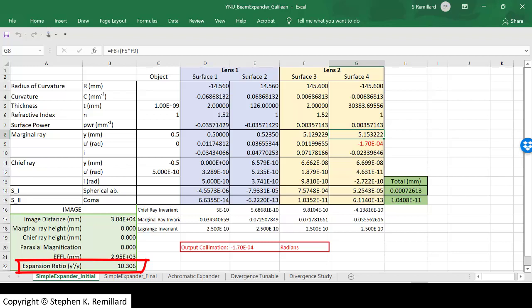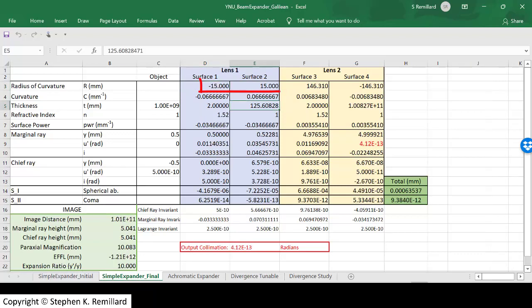Playing around with the separation between the two lenses and the curvature of lens 1, optimal collimation results with a radius of curvature of 15 millimeters and lens separation of 125.6 millimeters. 4 times 10 to the minus 13 radians. You can send a beam with that divergence to the moon and back, and its diameter will be barely changed.